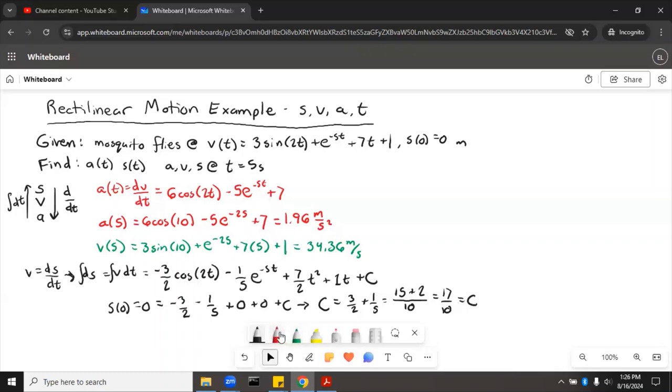So basically we can go over here and now cross out that c, and that is the 17 tenths. And I'll just put an arrow here because we solved for that. So now finally plugging in 5 to all of those, we'll have s of 5, plug 5 into each one of those things, and then that gets 95.5 meters. So that mosquito flew pretty far in that 5 seconds.